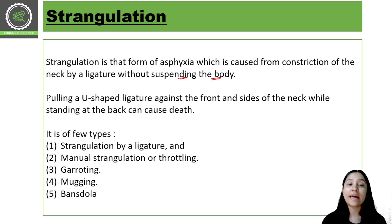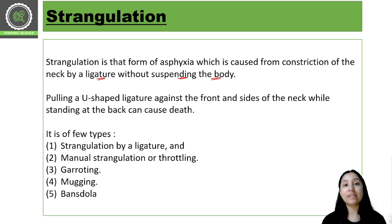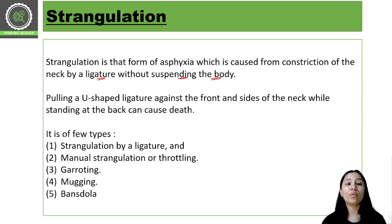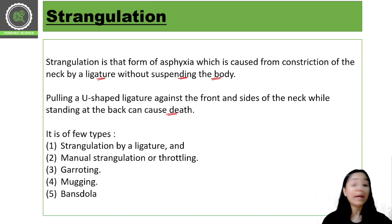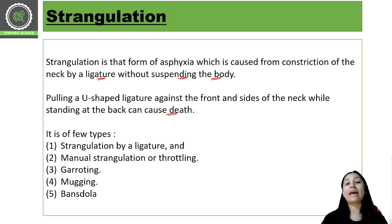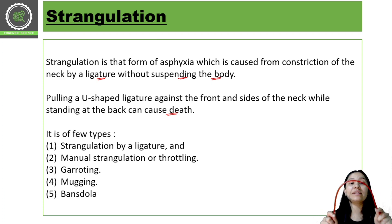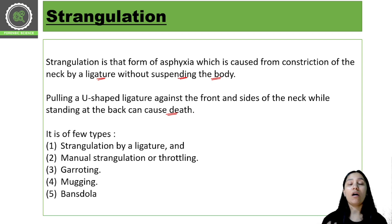If someone is constricting someone's neck with a ligature, that is ligature strangulation. Pulling a U-shaped ligature against the front and side of the neck while standing at the back causes death. For example, if I use a charging cable to trap someone from behind and apply pressure — that U-shape or C-shape ligature mark is present on the victim's neck — this comes under strangulation.